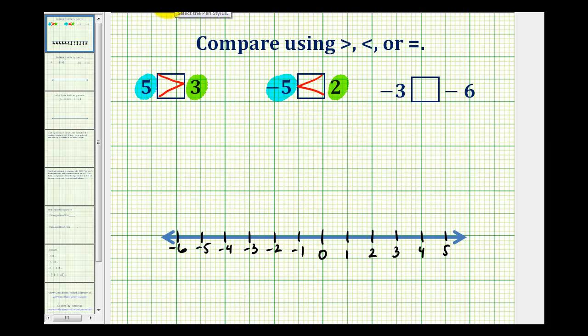For our last example, we'll compare negative 3 and negative 6. Negative 3 will be in blue, and negative 6 will be in green. Here's negative 3, and here's negative 6.